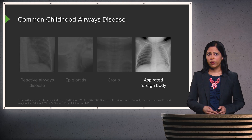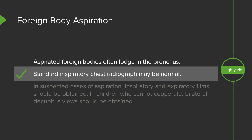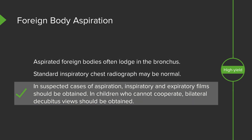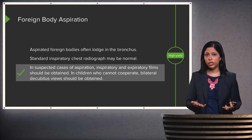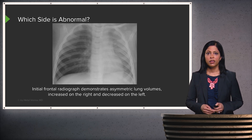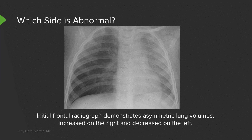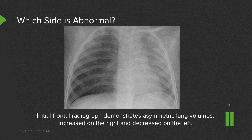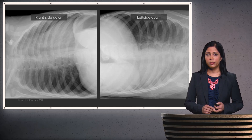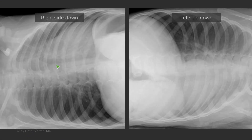Aspirated foreign body is very important to recognize in a child. Aspirated foreign bodies often lodge within the bronchus, and a standard inspiratory radiograph may be normal. In suspected cases of aspiration, you want to perform both an inspiratory and an expiratory film. In children who can't cooperate, you can perform bilateral decubitus views. In this case with a suspected foreign body, the frontal radiograph shows asymmetric lung volumes — volume is increased on the right and decreased on the left, making it hard to determine which side is abnormal. Bilateral decubitus views were performed, with the right side down on the left image and the left side down on the right image.